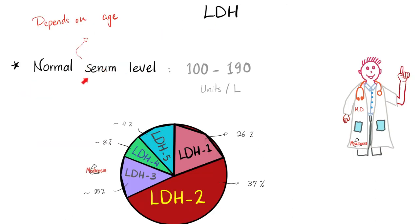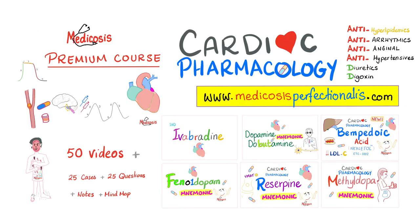What is the normal LDH serum level? For adults, total LDH is between 100 and 190 international units per liter. LDH1 makes up about 26% of the total — roughly one quarter. So if total LDH is 100, LDH1 is normally about 25 international units per liter. For more on treating myocardial infarction, arrhythmia, heart failure, and hypertension, check out the cardiac pharmacology course at medicosisperfectionalis.com.